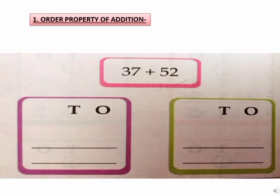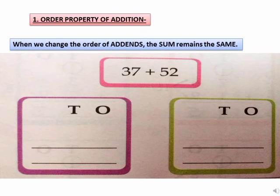What is order property of addition? In order property, when we change the order of addends, the sum remains the same.